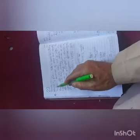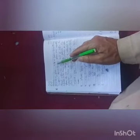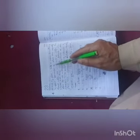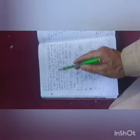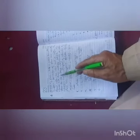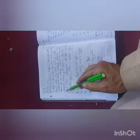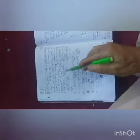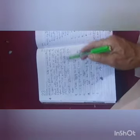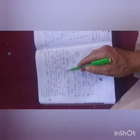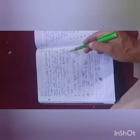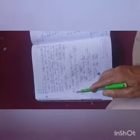Fourth type: adverbs of place. These tell us where something happens. Adverbs of place are usually placed after the main verb or after the clause that they modify. Adverbs of place do not modify adjectives or other adverbs, only verbs. Some examples of adverbs of place: here, everywhere, outside, away, around, near, nearby, there.